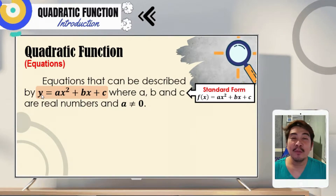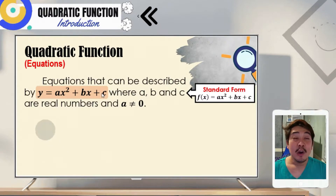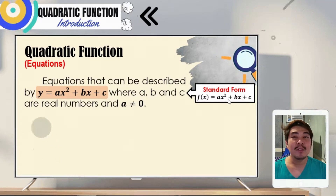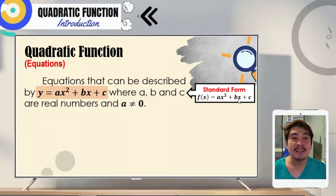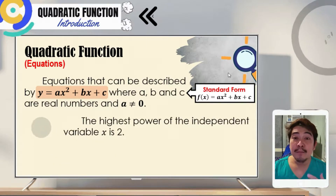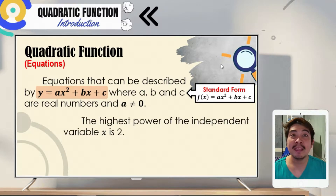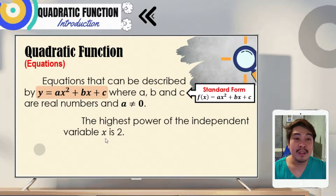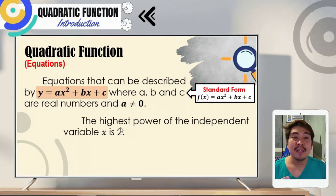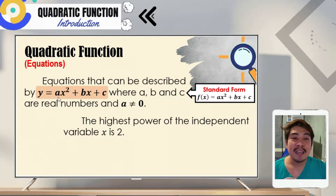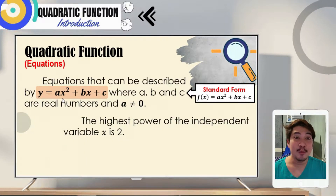So again, we have y is equal to ax squared plus bx plus c, or f of x is equal to ax squared plus bx plus c. Another important note is that the highest power of the independent variable x is 2. We need to take note that the highest exponent of x should be 2.